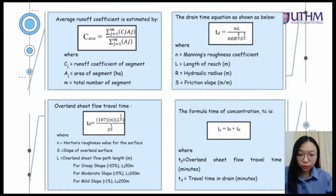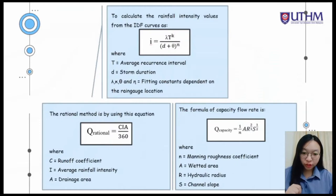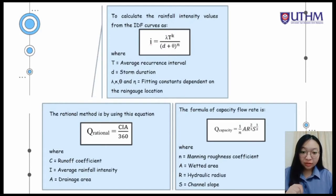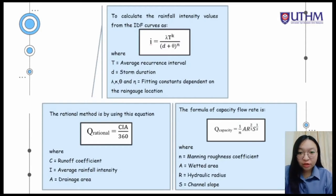T0 is the overland sheet flow travel time and Td is the travel time in drain. When we get the time of concentration, we must convert it to hours, because when estimating the rainfall intensity, the storm duration is in hours. To calculate the rainfall intensity value from the IDF curve, the formula uses T as the average recurrence interval, D as the storm duration, and lambda, k, delta, n as fitting constants that depend on the drainage location.